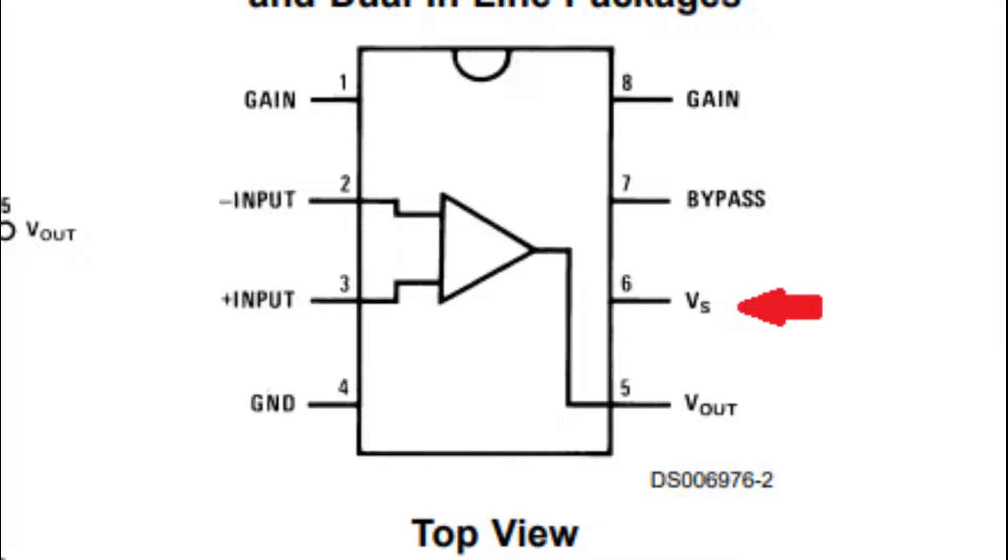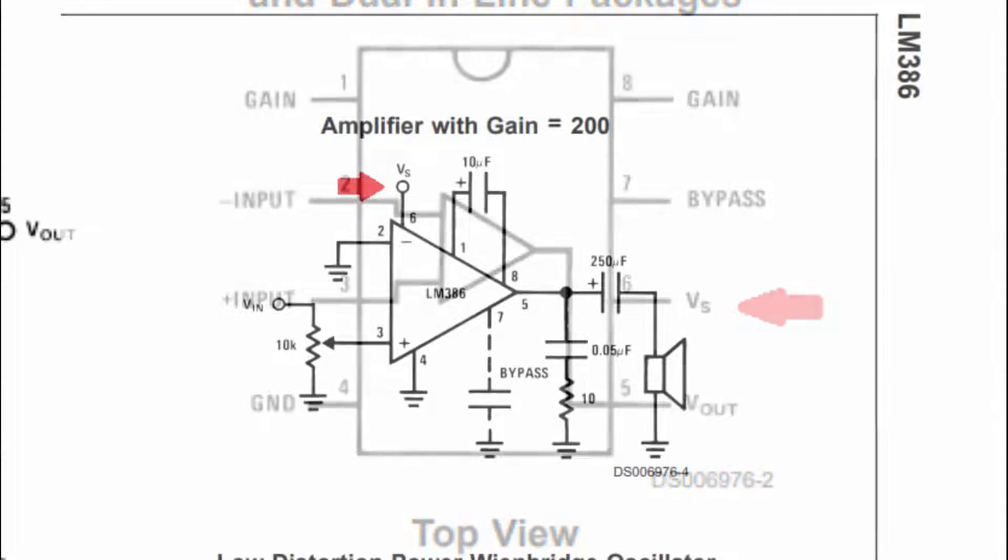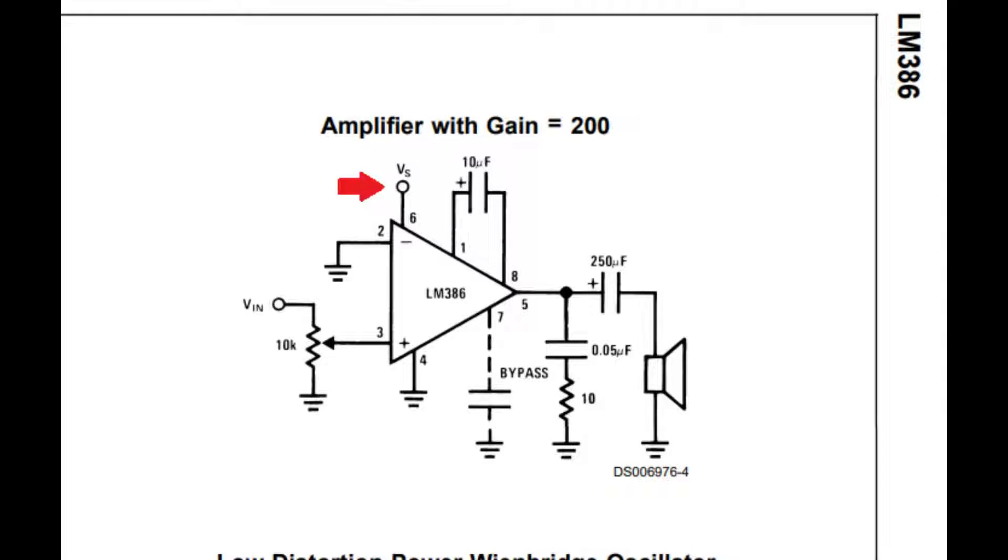Pin number 6 is another simple one. It is marked with VS, which means Voltage Supply, and that's exactly what it is. This is where you connect the power source.